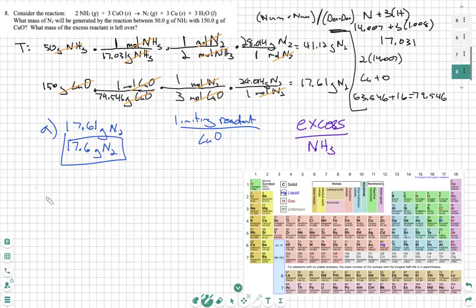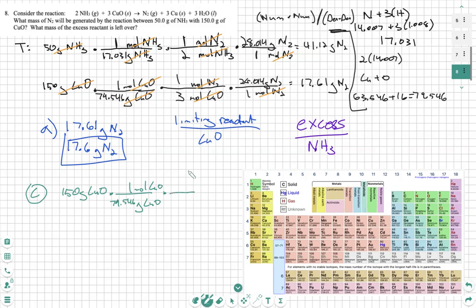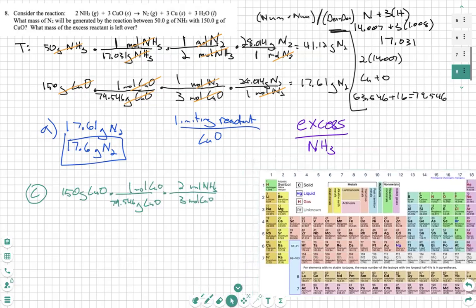To find the excess, all we need to do is take our limiting reactant — 150 grams of CuO — and convert that to NH3. We have to convert copper oxide to moles of copper oxide using the molar mass of 79.546. Then we apply the mole-to-mole ratio: moles of copper oxide on the bottom and moles of NH3 on top, using the coefficients from the balanced equation — 2 over 3. Lastly, we convert to grams by putting 1 mole of NH3 on the bottom and the molar mass, 17.031 grams of NH3, on top.